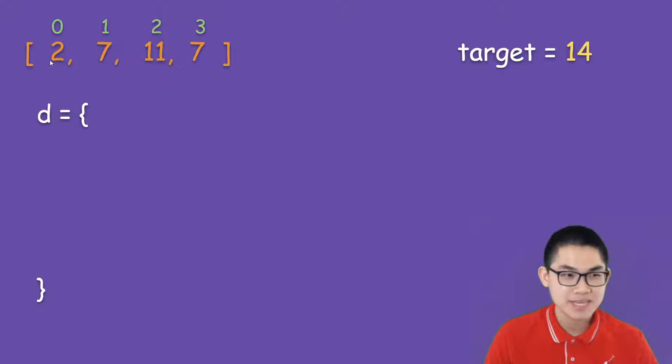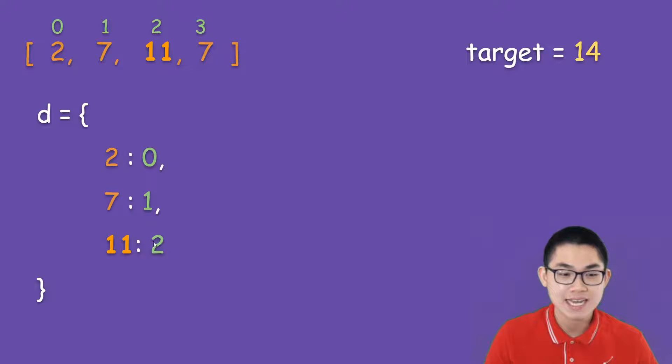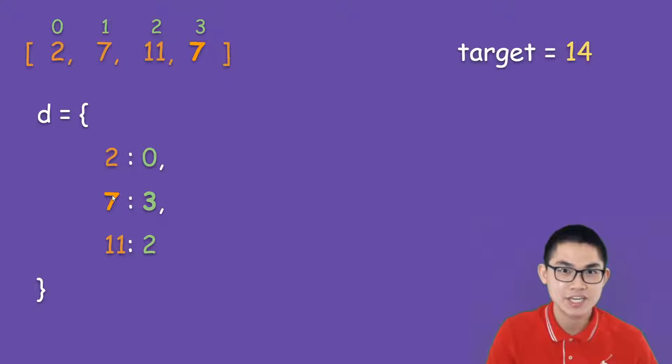We start at the beginning, we put 2 into the dictionary, and at 7, we add it in here, the index is 1, then 11, the index is 2, and then 7, which is 3. And all we have to do is go in here and update the index of 7 because we already have 7 inside the dictionary.